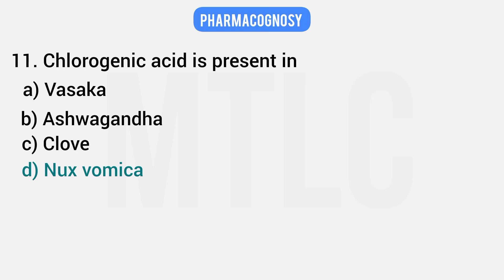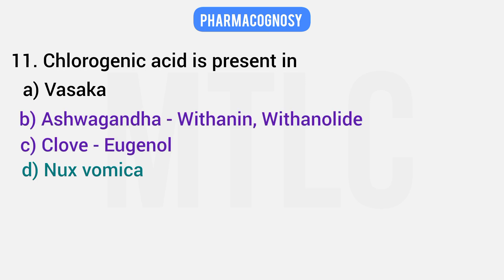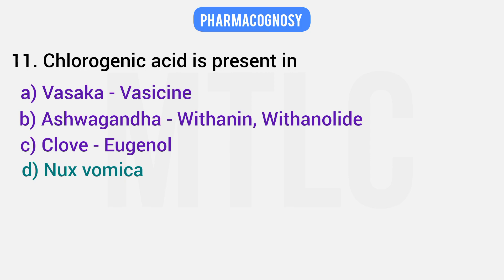The correct answer for chlorogenic acid is Nux vomica. Clove contains eugenol. Ashwagandha contains withanolides and somniferine. Vasaka contains vasicine and vasicinoline. These are each drug's respective chemical constituents, so chlorogenic acid is associated with Nux vomica, not the others.